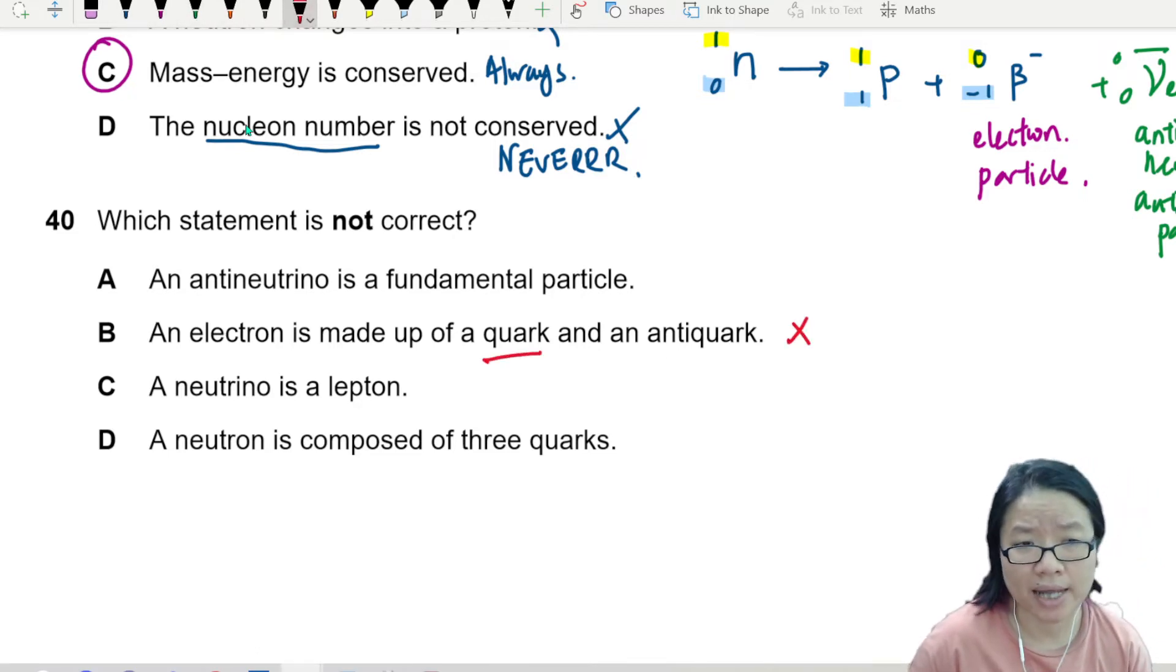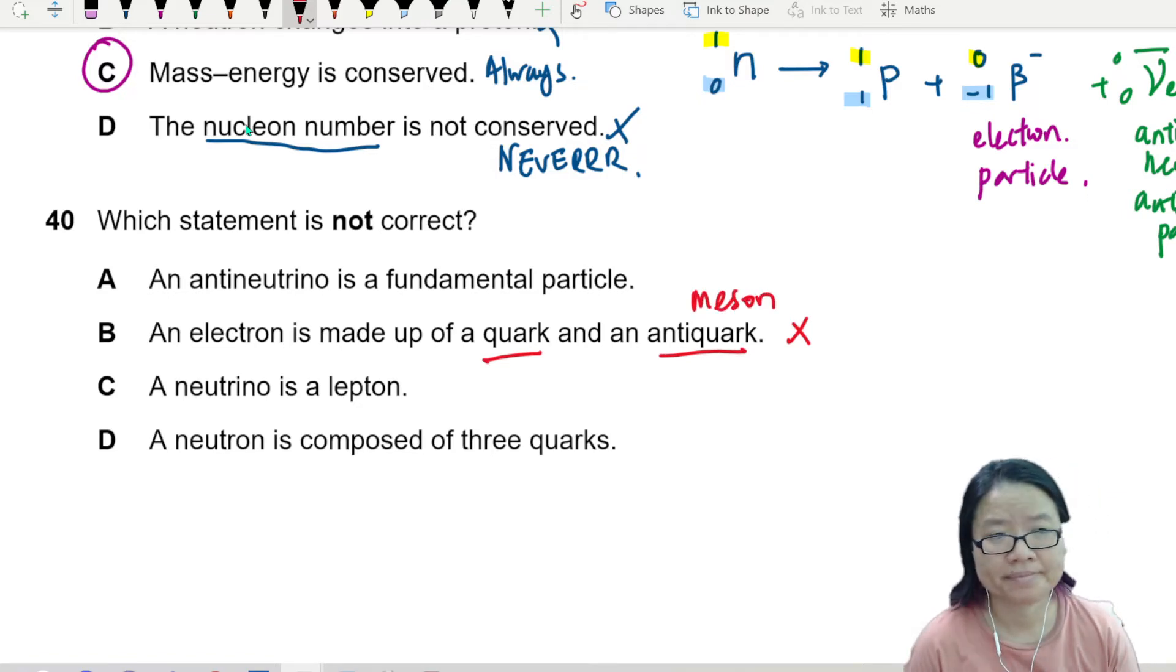So a quark and an anti-quark is actually a type of meson. Or basically, it's not an electron, okay?